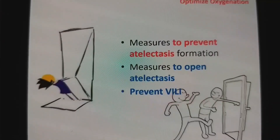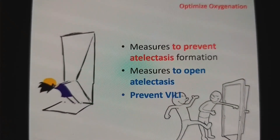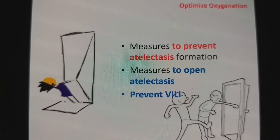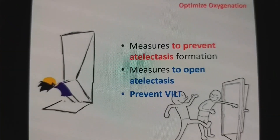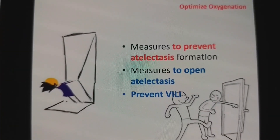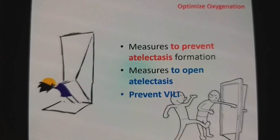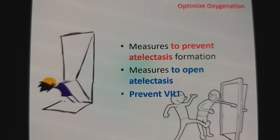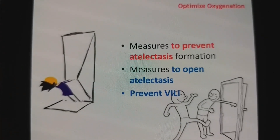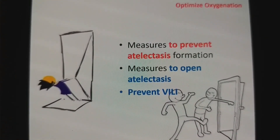Our aim during perioperative ventilation: first, we need to prevent atelectasis formation; and second, we need to take measures to open atelectasis when it occurs. We will discuss these one by one.